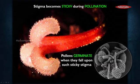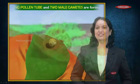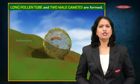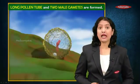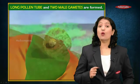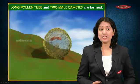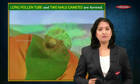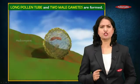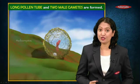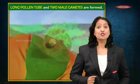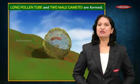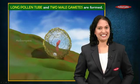Because of the sugary solution, the pollen grains germinate when they fall upon the sticky stigma. A long pollen tube and two male gametes are formed. When the pollen grains germinate they sprout, and that sprout is nothing else but a long pollen tube. Inside this pollen tube, eventually two male gametes or two reproductive cells are formed.